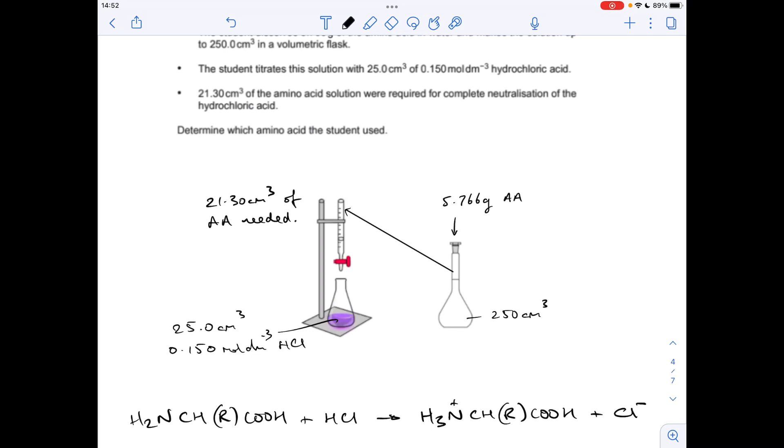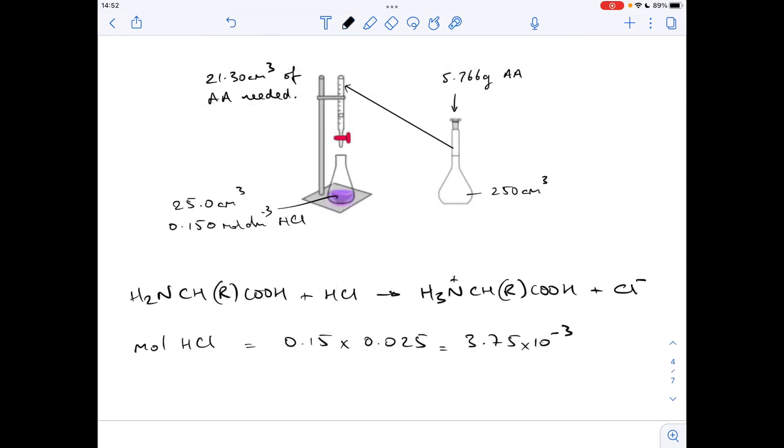OK, so in the calculation the first thing we can do is work out the moles of hydrochloric acid that have been used. Concentration times volume, but remember the volume has to be in decimetres cubed. You can see that's coming out at 3.75 times 10 to the minus 3. Because of this mole ratio, 1 to 1, we now know that there's that many moles of the amino acid in that 21.3 cm cubed titre.